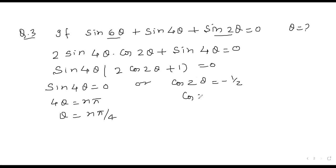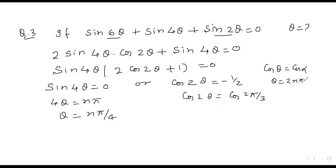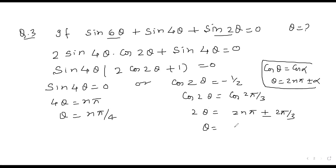For cos 2θ = −1/2, that means cos 2θ = cos(2π/3). Using cos θ = cos α ⟹ θ = 2nπ ± α, we get 2θ = 2nπ ± 2π/3, so θ = nπ ± π/3. That's our answer.